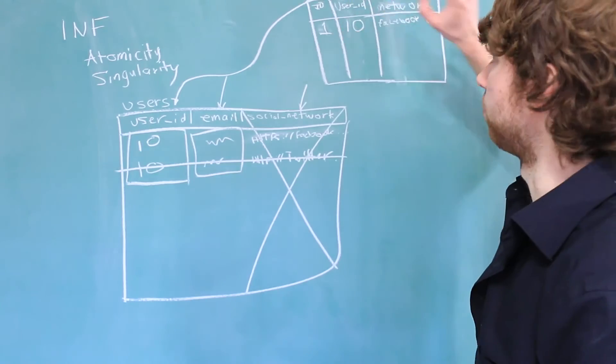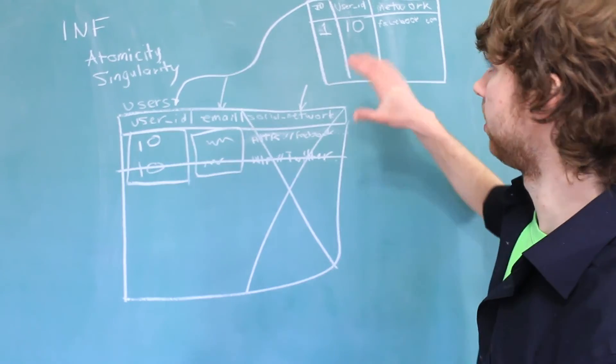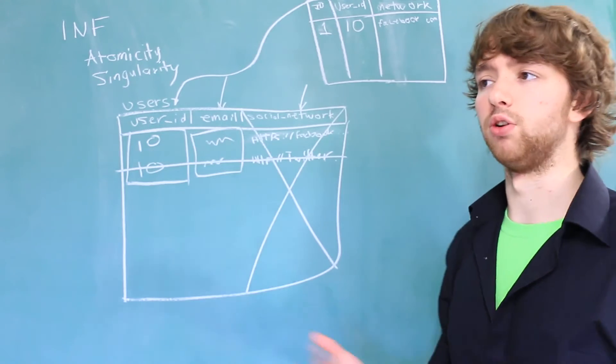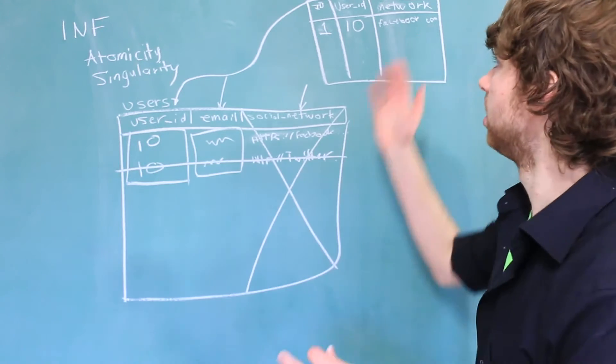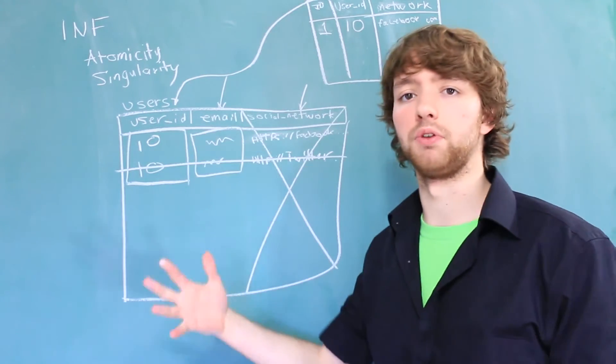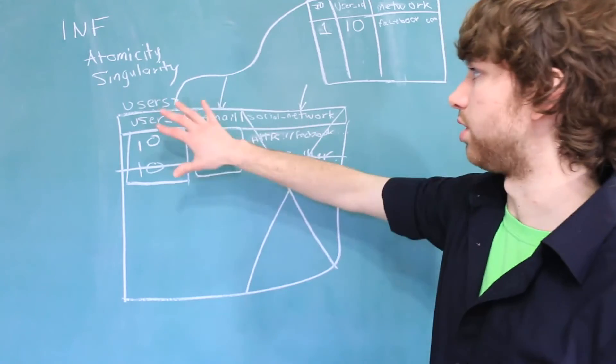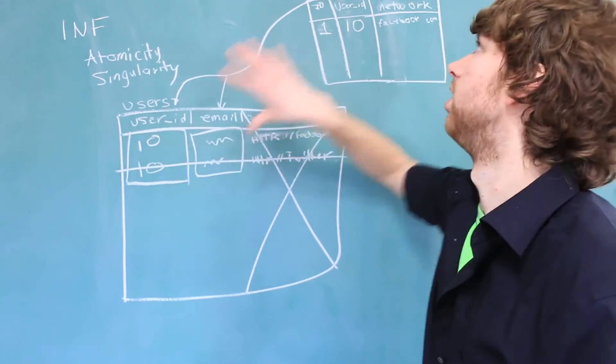Any data related to the network would go in here. This is essentially making a one-to-many relationship, and you can go back and watch that video about one-to-many relationships, but essentially this is going to have a foreign key, the user ID, and the parent is not even going to have anything referencing back to the children in the main table. So the user doesn't even need to know about the networks.